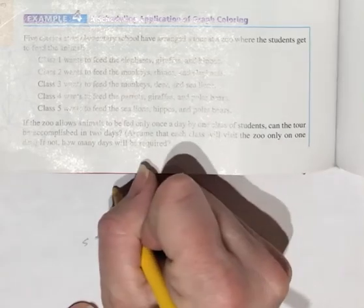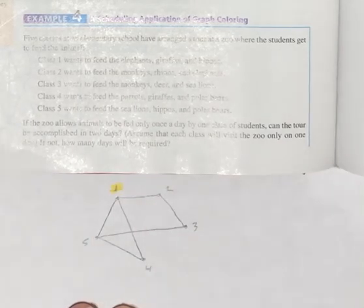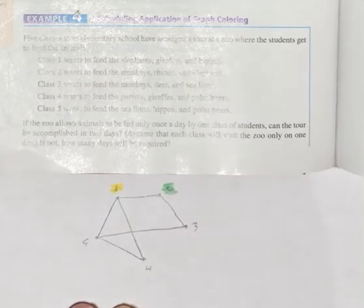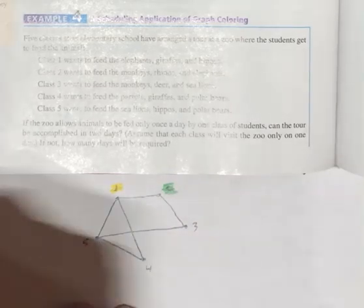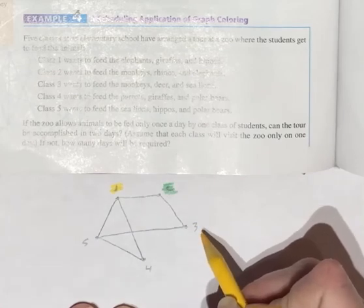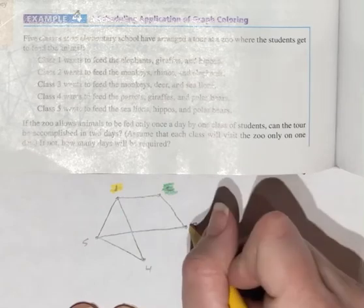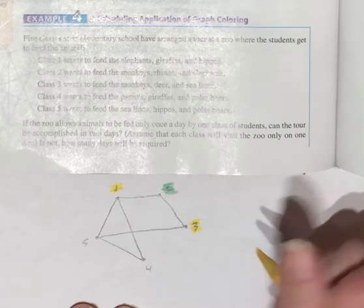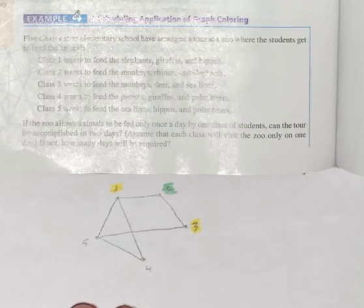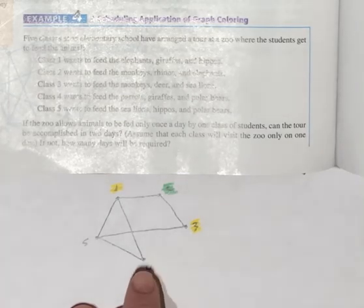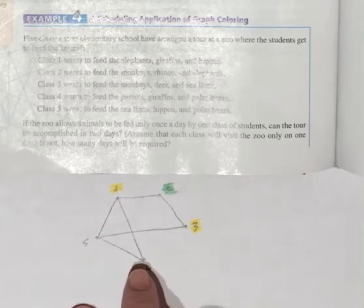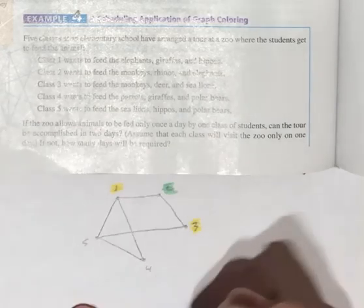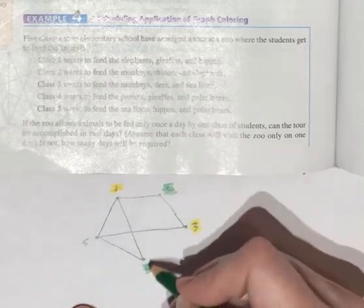So I'm going to start with class number one. They get to go first. Okay. So class number two cannot go on the same day as class number one. So they're going to be a new color. Class number three could go on the same day as class number one. Class three and one don't have any conflicts. Class number four cannot go on the same as one, but could go at the same day as two or three. So I'm going to also put class number four on the same day as class number two. Those two can go together.